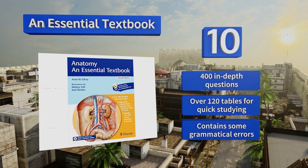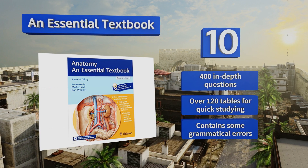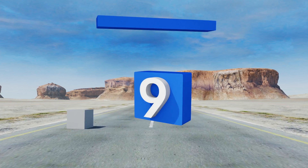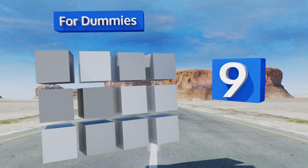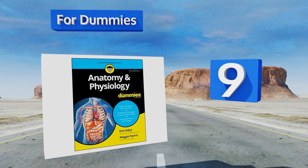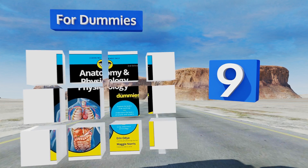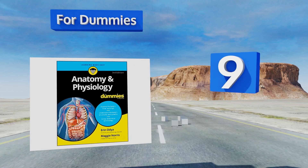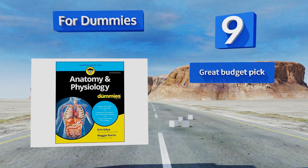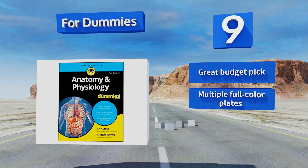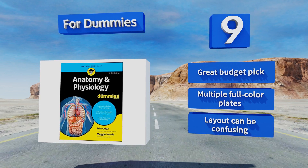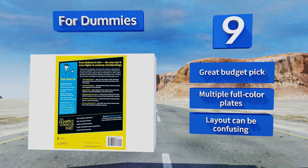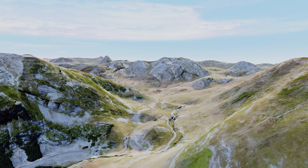However, it does contain some grammatical errors. At number nine, for the casual reader interested in human physiology, Human Physiology for Dummies is a fine, fun-to-read choice that addresses key concepts and system interactions. For the pre-med student who needs to gain an in-depth understanding of the body, it is rather insufficient. It's a great budget pick with multiple full-color plates, but the layout can be confusing.